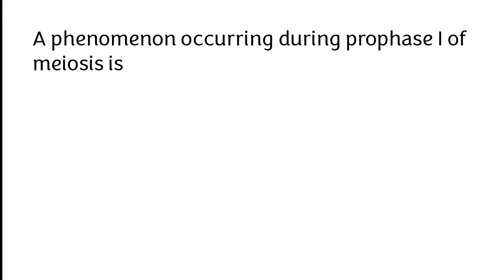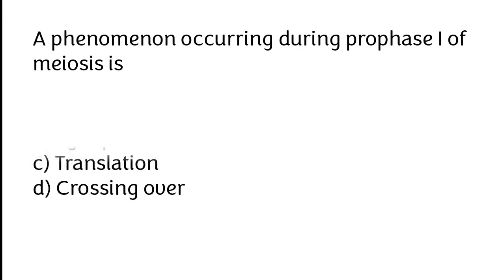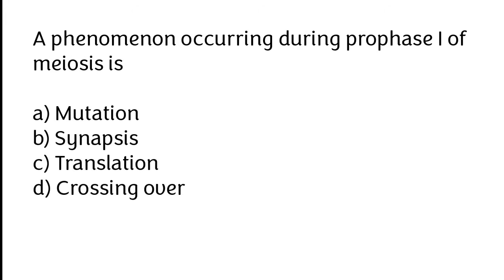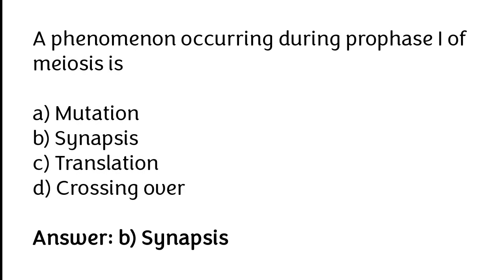A phenomenon occurring during prophase I of meiosis is: mutation, synapsis, translation, crossing over. The correct answer is option B. A phenomenon occurring during prophase I of meiosis is synapsis.